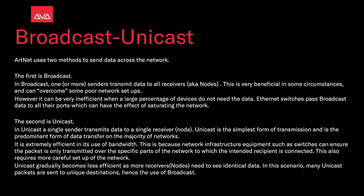Artnet uses two methods to send data across the network. The first is Broadcast. In Broadcast, one or more senders transmit data to all receivers, also known as nodes. This is very beneficial in some circumstances and can overcome some poor network setups. However, it can be very inefficient when a large percentage of devices do not need the data. Ethernet switches pass broadcast data to all their ports, which can have the effect of saturating the network.